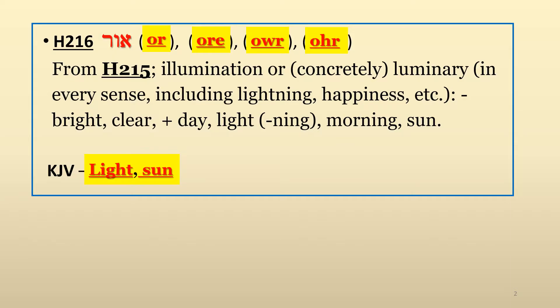The first Hebrew word we want to discuss is Strong's number 216, which is pronounced OR and has the principal meaning of light or sun. It can be transliterated in various ways, including O-R, O-R-E, O-W-R, and O-H-R.